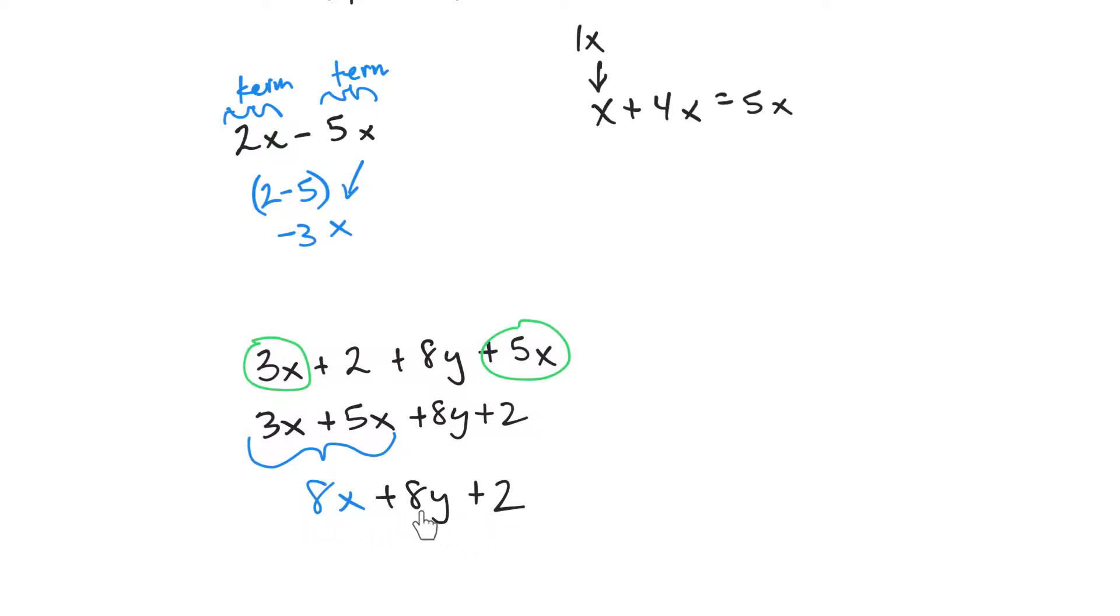And now, I cannot combine these at all. This is as simple as you can make it because you would have to combine like terms, which means they have the same letter. And this one doesn't even have a letter or letters in math we call variables. So this has no variable, has no like terms. There are no other y terms here to combine this with. And there are no other x terms to combine with. So this would be a fully simplified algebraic expression.